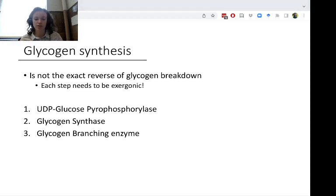We need to make sure that overall the pathway is still exergonic. So glycogen synthesis is performed by three different enzymes: UDP-glucose pyrophosphorylase, glycogen synthase, and glycogen branching enzyme.